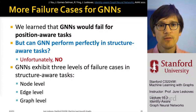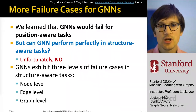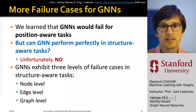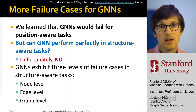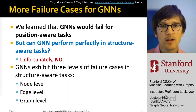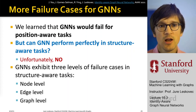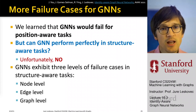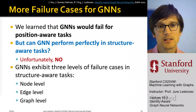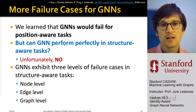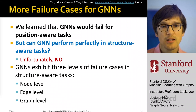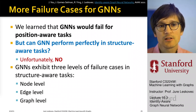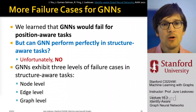What we have learned so far is that classical GNNs would fail for position-aware tasks. We said let's use anchors to improve graph neural network performance on position-aware tasks. Now we are going to switch back and focus more on structure-aware tasks and ask: can GNNs perform perfectly on structure-aware tasks? And as we have seen before, the answer is unfortunately no. GNNs exhibit three levels of failure cases in structure-aware tasks, and I'm going to show you some of those failure cases.